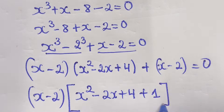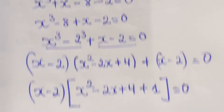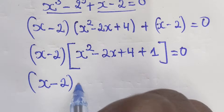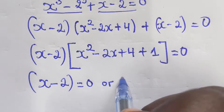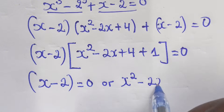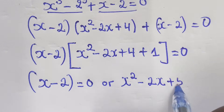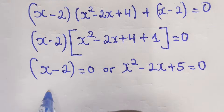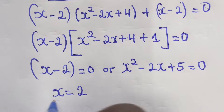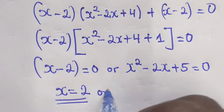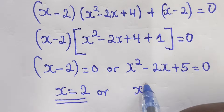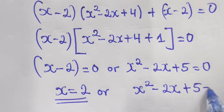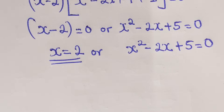...plus 1, equals 0. So (x - 2)(x² - 2x + 5) = 0. At this stage, x - 2 = 0 gives x = 2, and x² - 2x + 5 = 0 for the other roots.